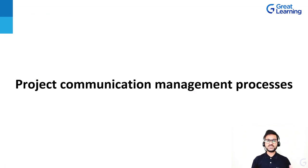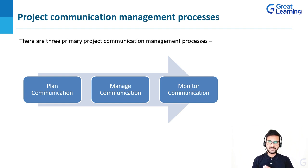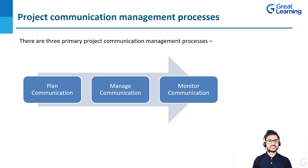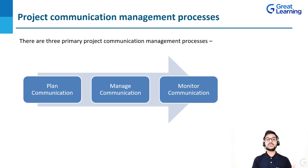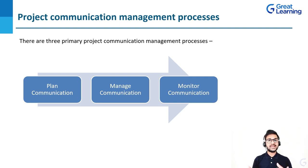Now that we have understood what exactly is project communication management, let's discuss the different processes. There are three primary project communication management processes. Number one: planning communication — finding the answers to the WH questions: what will happen, how are we going to do it, what will be the channel, who's going to receive the information? Number two: managing communication — it's about creating the content of the communication and distribution of that communication. And finally, monitoring communication — making revisions in the plans based upon feedback and the control we are having over the communication. We are going to look at each of these processes in much more detail.